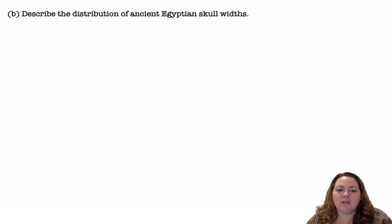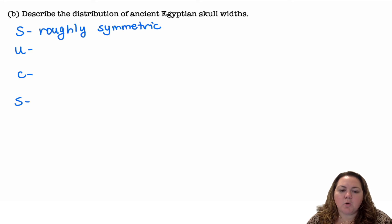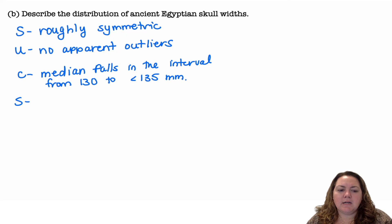Describe the distribution of ancient Egyptian skull widths. We're going to describe the distribution using SOCS: shape, unusual features, center, spread. Shape is roughly symmetric. There are no apparent outliers, nothing obvious. Median falls in the interval from 130 to 135 millimeters. And the widths range from 119 millimeters to 141 millimeters.